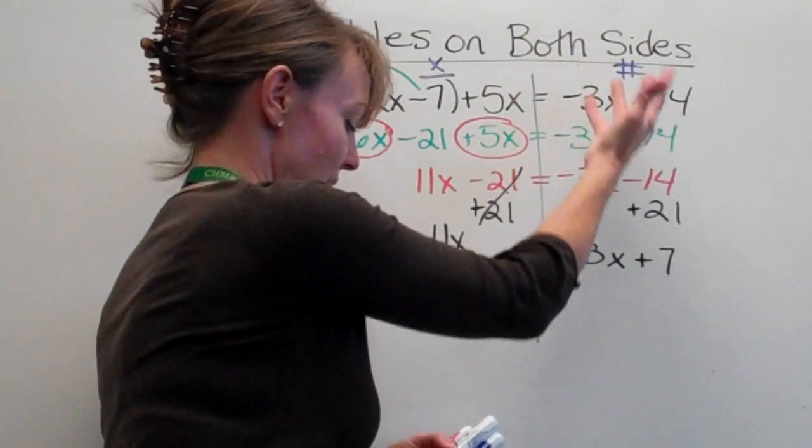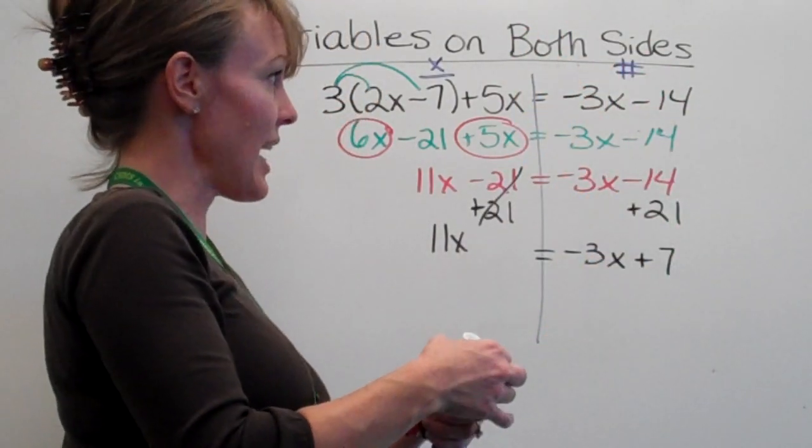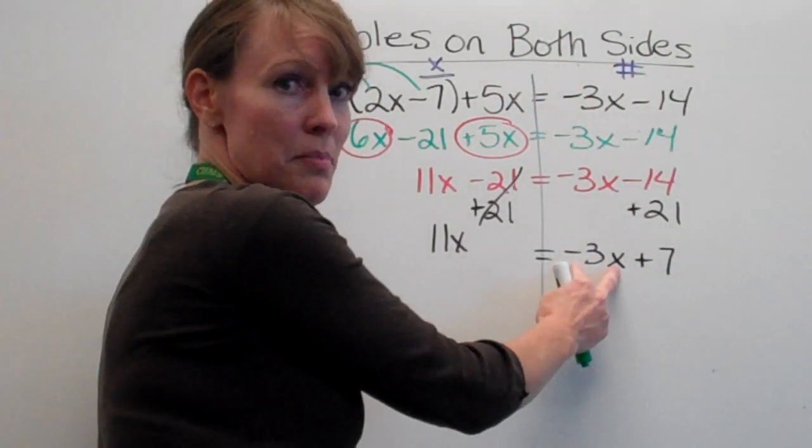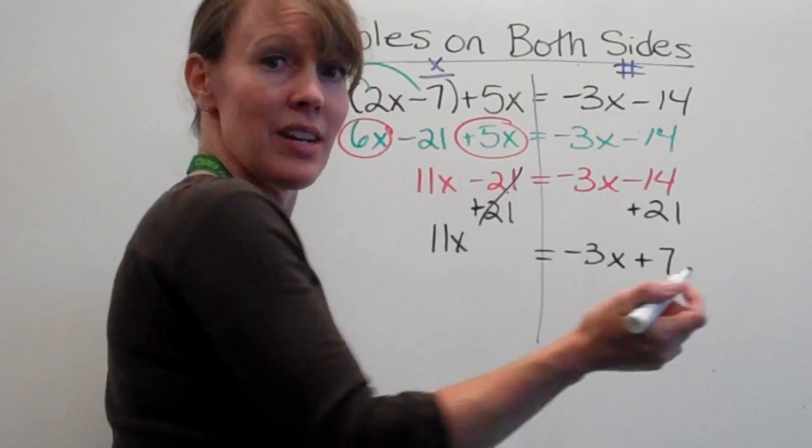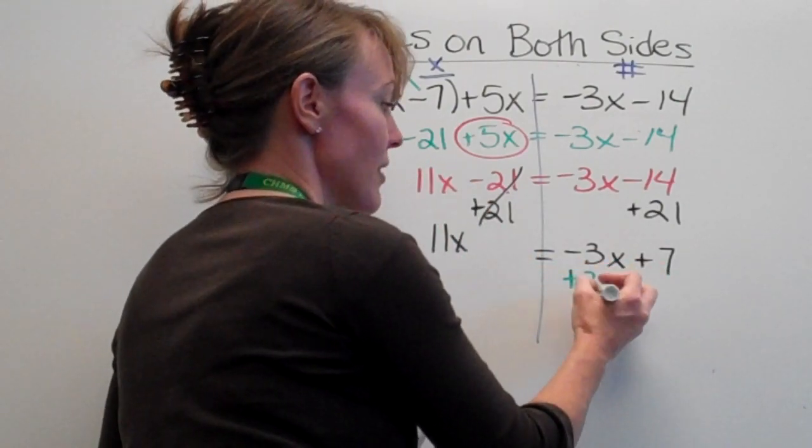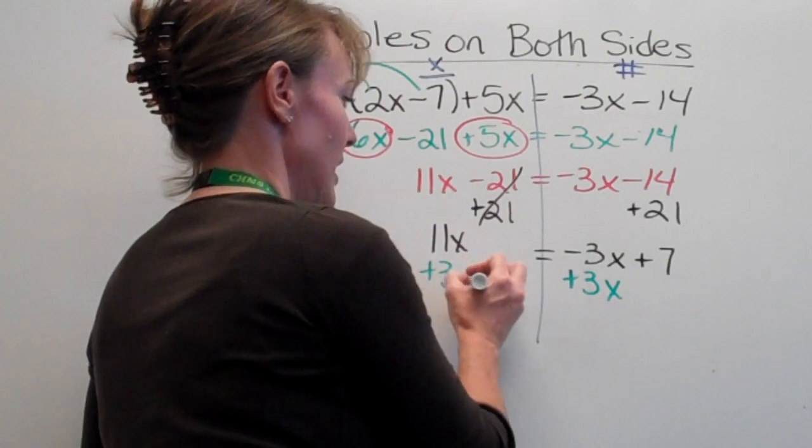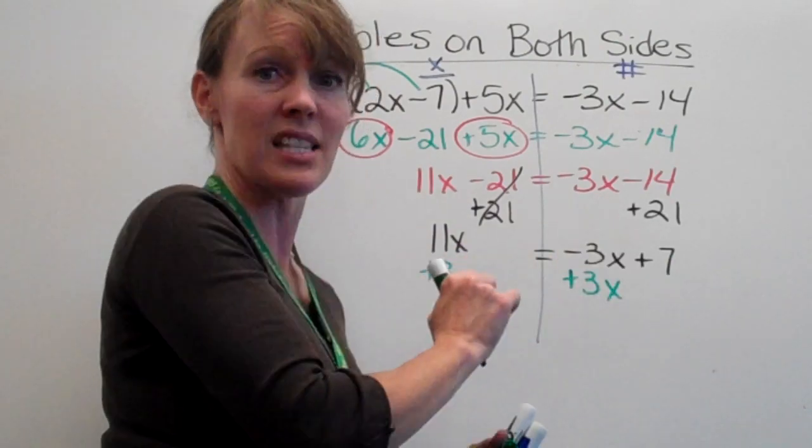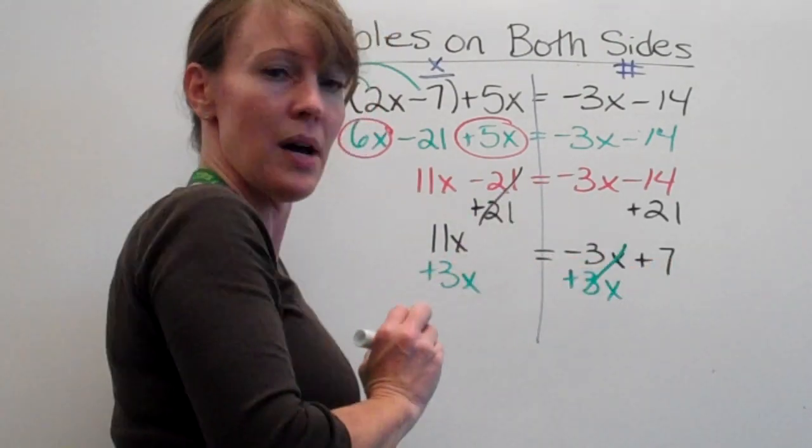Now I look at my number side. And I see that on my number side, this 3x doesn't belong there. So the opposite of negative 3x is positive 3x, both sides. Negative 3x and positive 3x is 0. Good. That goes away.